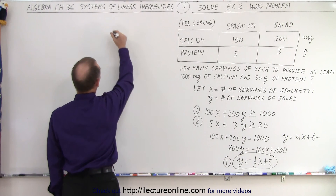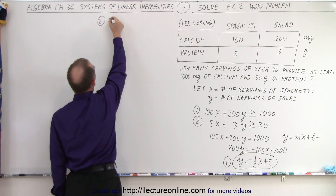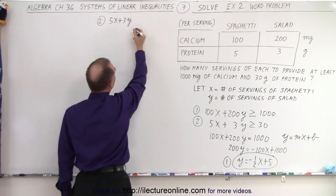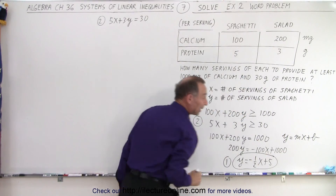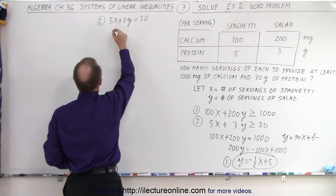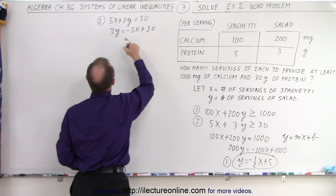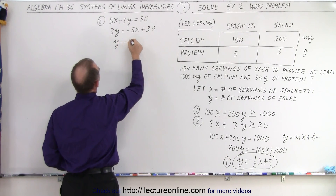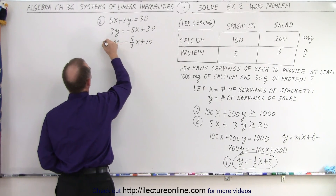Now we find the second boundary. Equation number two: 5x plus 3y equals 30. Again, we want it in y = mx + b form. Moving everything except y to the other side gives 3y equals negative 5x plus 30. Dividing both sides by 3, we get y equals negative five-thirds x plus 10. That's our second boundary equation.